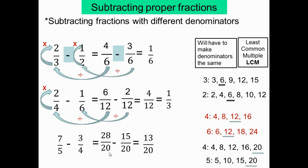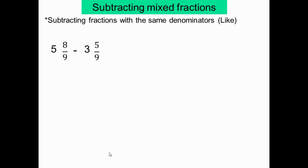Maintenant on va soustraire des fractions mixtes avec le même dénominateur. Ensuite, on verra les fractions mixtes avec des dénominateurs différents. Pour soustraire des nombres mixtes ou mixed numbers avec le même dénominateur, un nombre mixte c'est un nombre entier suivi d'une fraction — par exemple: 5 et quelque chose comme fraction.